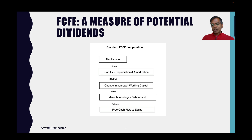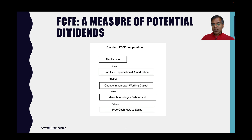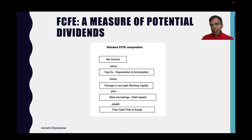The problem with net income is it's an accounting earnings number, not a cash flow number. To make that transition to cash flows, I do two things. One is I add back depreciation and amortization, because it's an accounting expense but not a cash expense. But I also subtract out capex, which accountants might not treat as an accounting expense, but it's a cash outflow.